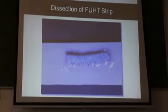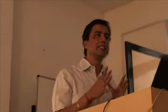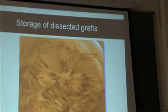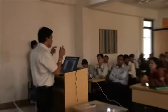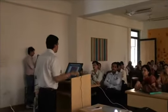The slivers are then dissected under a microscope into individual follicular units. These follicular units are then stored in chilled Ringer's lactate before they are transplanted into the new location.